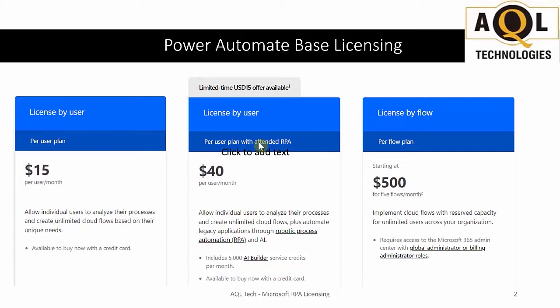With the $40 plan you get Power Automate web flows plus attended RPA. Attended RPA also includes 5,000 AI Builder service credits per month. There is a limited-time offer on this $40 plan through June 2022 — it's going to be $15 per user per month.